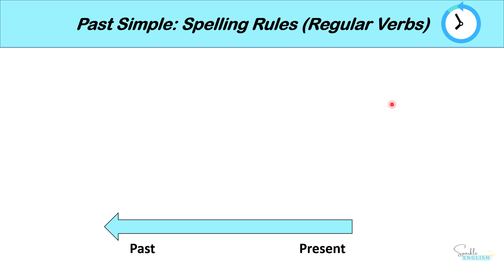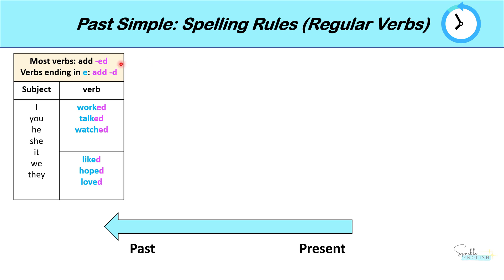So now let's talk about spelling rules for regular verbs in the past simple. With most verbs, we add ED. So for example, I work in the present tense would become I worked — we add ED. Talk becomes talked. Watch becomes watched. And the verb stays the same in the past simple even if you are using the first, second, or third person.